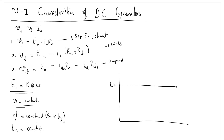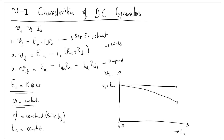We need to plot VT with respect to IA. For a separately excited and shunt generator, VT equals EA minus IA·RA. So as IA increases — as we load the system — initially at no load IA equals zero and VT equals EA. But as we load the system, since the value of RA is not large, the IA·RA drop will not be much but there will be some drop. As current increases, IA·RA will increase, meaning VT will fall.